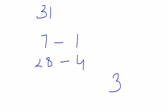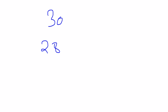Now if I'm asked to find the odd days from a month that has 30 days in it, I'll see that 28 days make four weeks, so two days are remaining — the 29th and 30th day. So there are two odd days in a month which has 30 days.